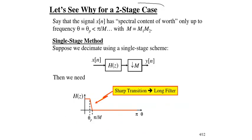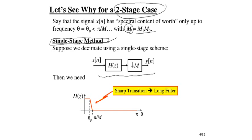Let's take an example for a two-stage case. Two-stage means we break the decimation factor into M1 and M2. We compare single-stage versus two-stage implementation. In single-stage, the filter has stop-band frequency π/M — the transition band is quite narrow and the transition is very sharp. To implement this kind of filter the filter coefficients will be very large, so the filter size is long, which increases cost.